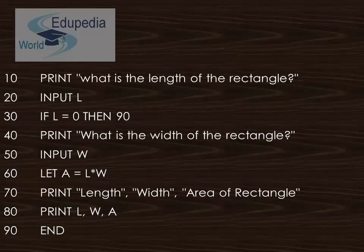Then comes the formula: let A = L × W. The product of the length and width is assigned to variable A, which represents the area. Finally, we print the length, width, and area of the rectangle to display the desired results, followed by the end of the program.